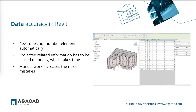Another issue we face working with Revit is data accuracy. Once we have modeled the building, wall panels need to be identified with project-related information — necessary for documentation and construction works. But that can be quite a time-consuming task in native Revit, because Revit itself does not provide marks or project-related information and it has to be entered manually. In the example on the right, you can see how slow the process is.